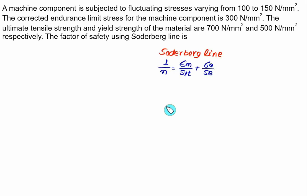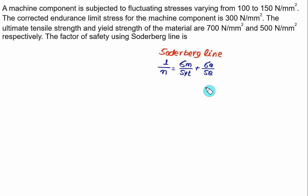According to the Soderberg criteria, 1 upon factor of safety equals mean stress divided by SYT plus amplitude stress divided by SE.